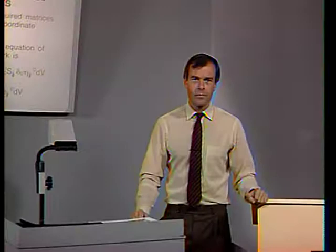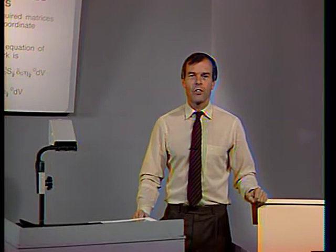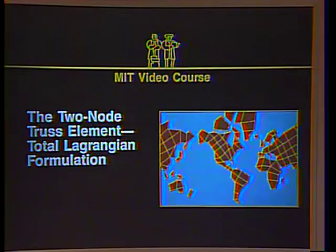Welcome to this lecture on nonlinear finite element analysis of solids and structures. In this lecture, I would like to discuss the total Lagrangian formulation of the two-noded truss element. In the previous lecture, we considered the updated Lagrangian formulation of the same element, starting from the general continuum mechanics equations and obtaining the governing finite element matrices. We will do the same now for the total Lagrangian formulation, and we will see that the finite element matrices are indeed the same.